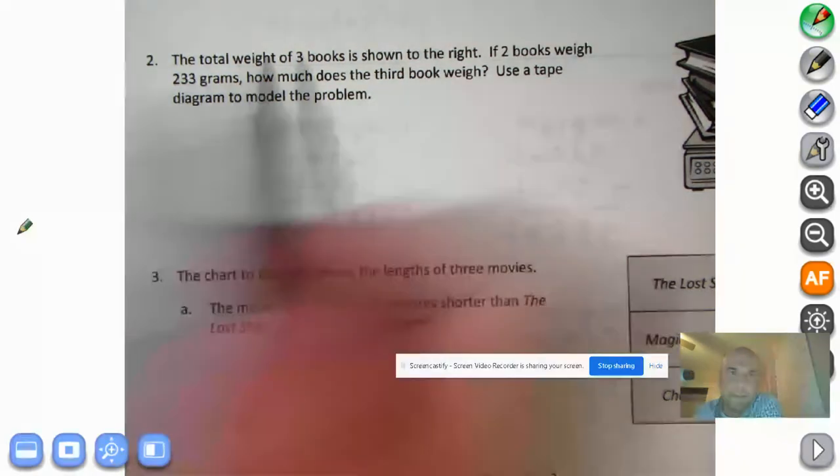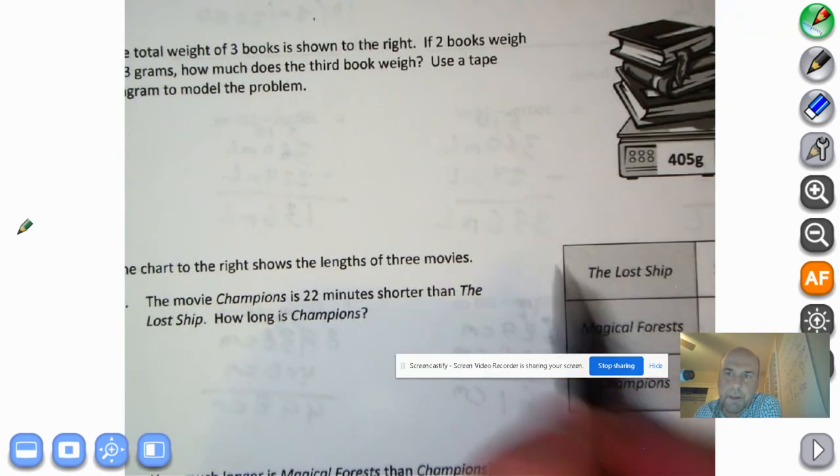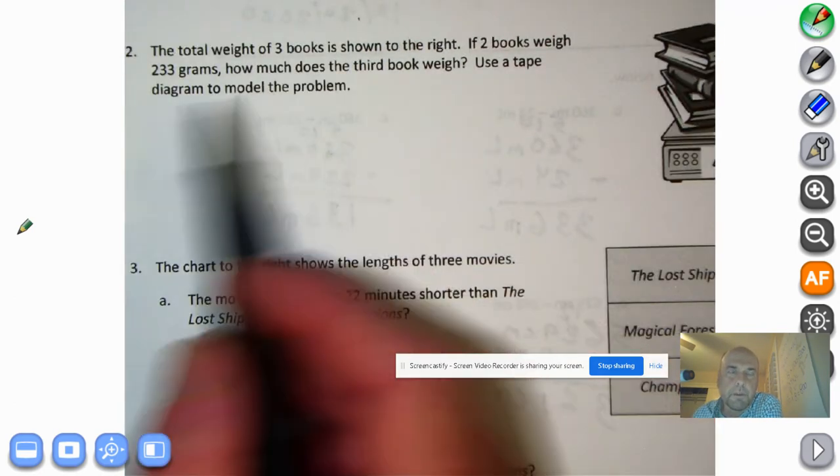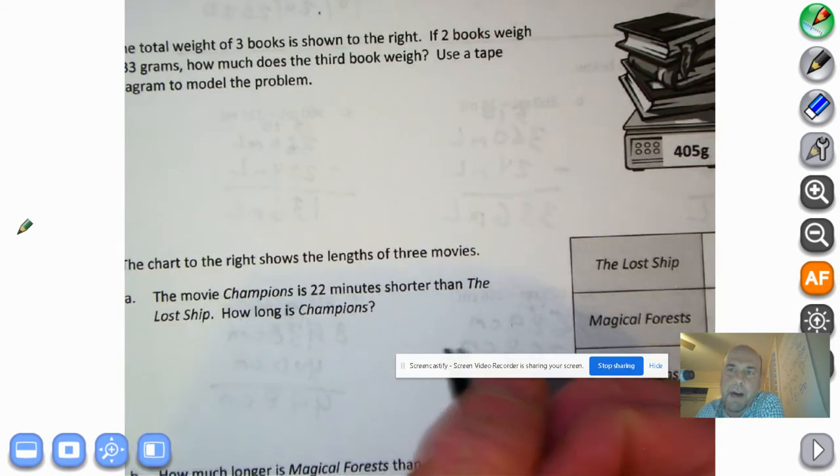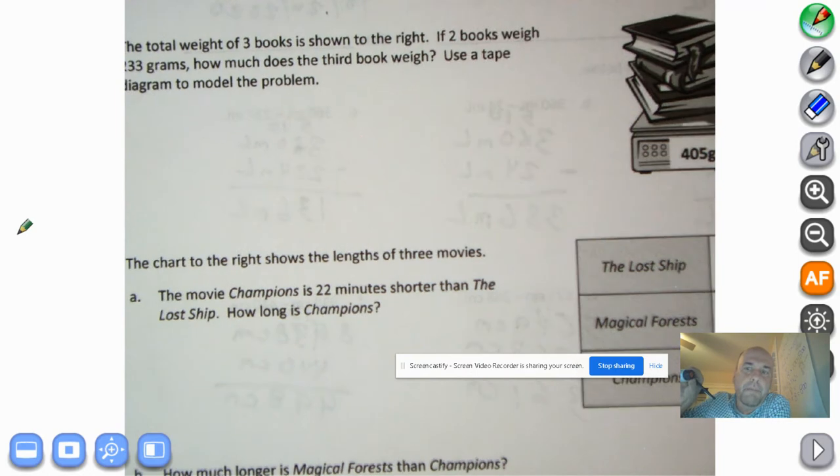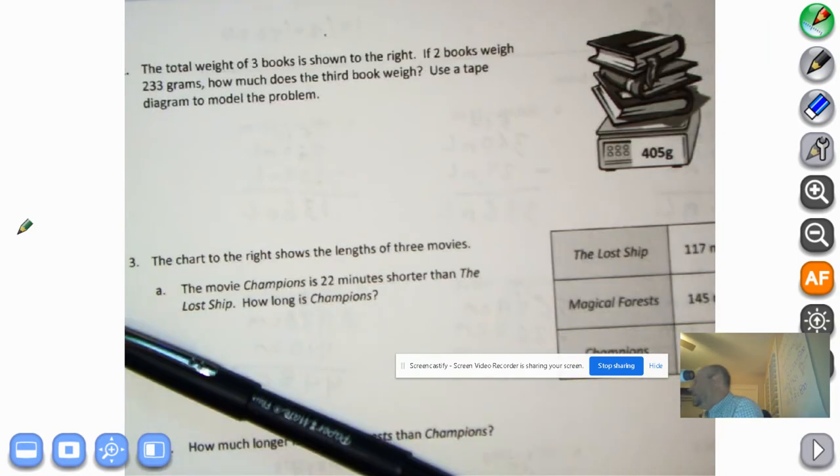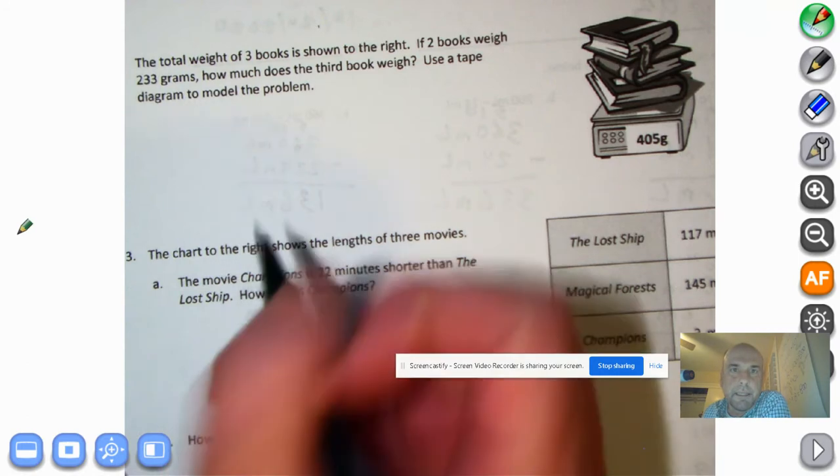The total weight of three books is shown to the right. Well, there it is, 405 grams. If two books weigh 233 grams, how much does the third book weigh? Use a tape diagram to model this problem. It is a problem too, it's a big problem. Alright, so let's make a tape diagram.